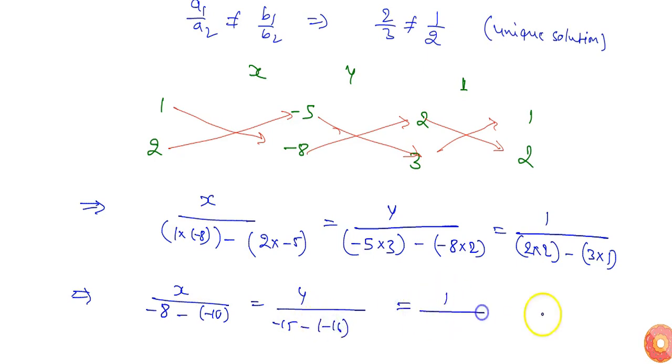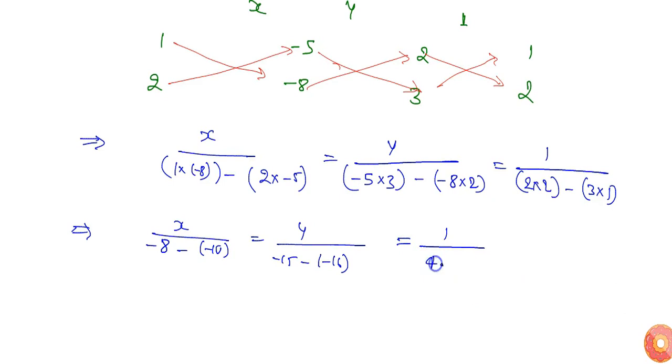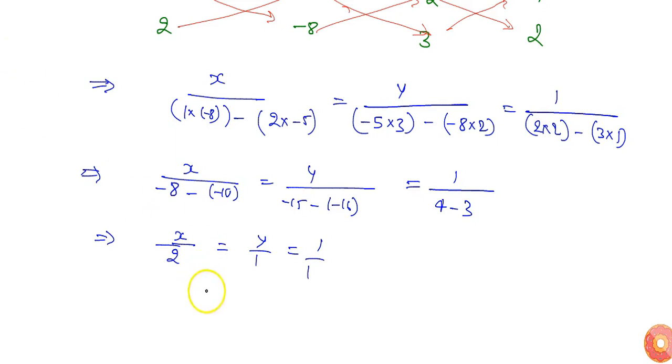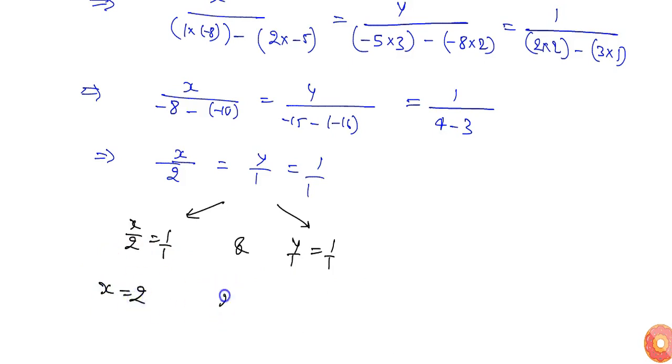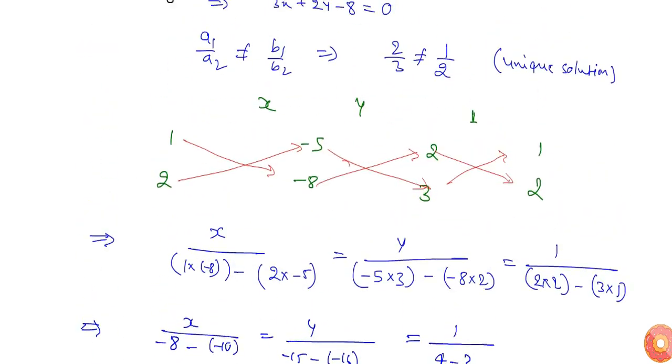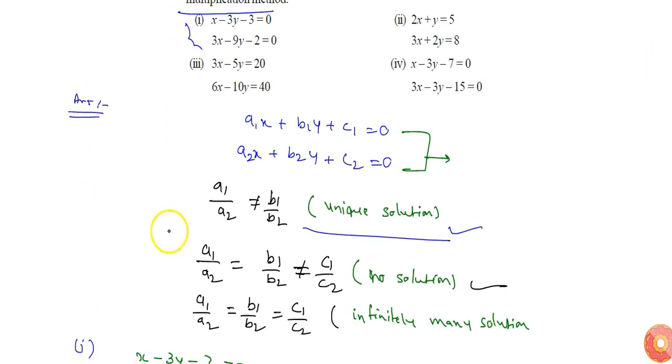So I will get x/2 = y/1 = 1/1. Or I can write x/2 = 1/1 and y/1 = 1/1. So the value of x will be 2 and the value of y will be 1, which is unique. So the equation pair has a unique solution. Now take part 3.